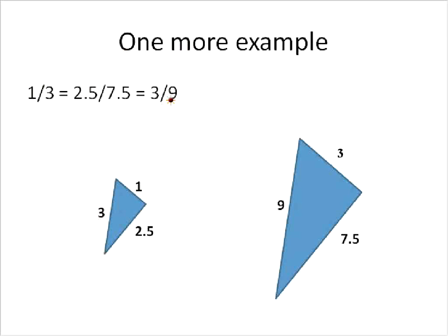In other words, these are all equivalent fractions or proportional to each other. So these lines, then, are proportional lengths, and these two triangles are similar triangles to each other.